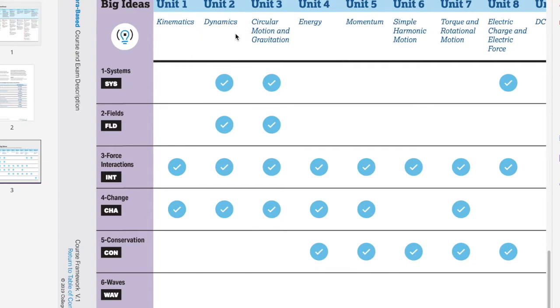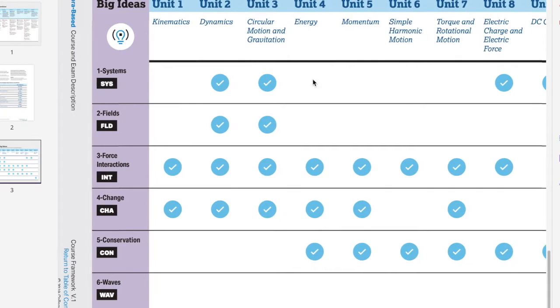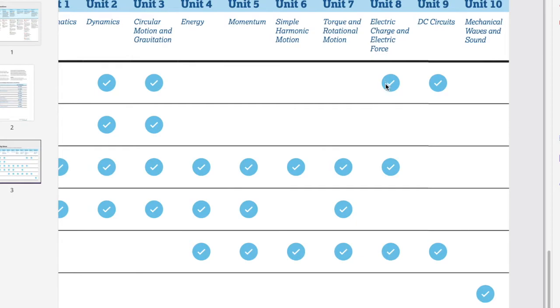We'll especially see them in Unit 2, Unit 3. And although there's no check mark here, we will be talking about them in Unit 4, because energy is conserved in certain types of systems. We'll also be seeing them when we discuss electrodynamics and electric circuits.